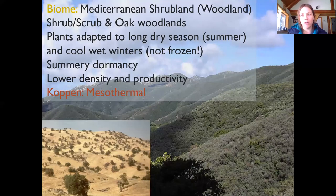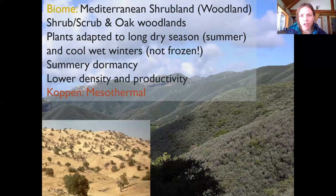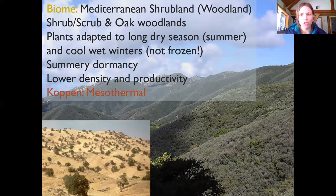The next biome is one that as Californians we're very familiar with — the Mediterranean shrubland, sometimes also called a Mediterranean woodland environment. Here we have different kinds of shrubs, sometimes called scrubs, or open oak woodland types of environments — trees but much more spread out than in a traditional forest. On the left we have a picture of California rolling oak woodland hills in the Bay Area.